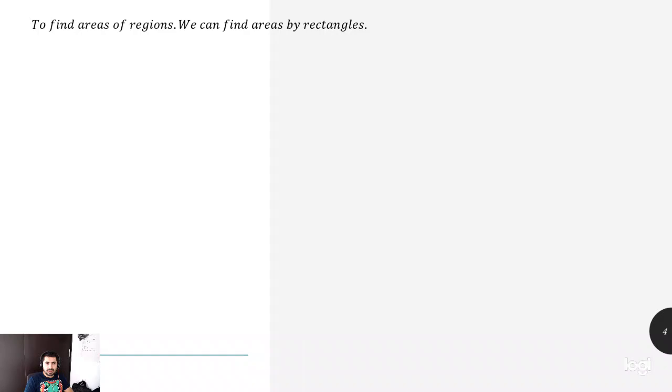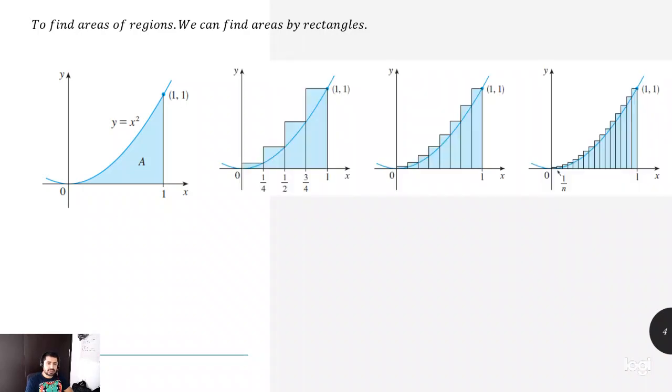Then to find areas of regions, we can find areas by rectangles. So imagine that we have a function. This is the y-axis, this is the x-axis, and this is a function that represents y equals x squared, which increases really fast. So we want to know what's the area under the curve in the point (1,1). So this should be area A. Maybe you don't know the tools.